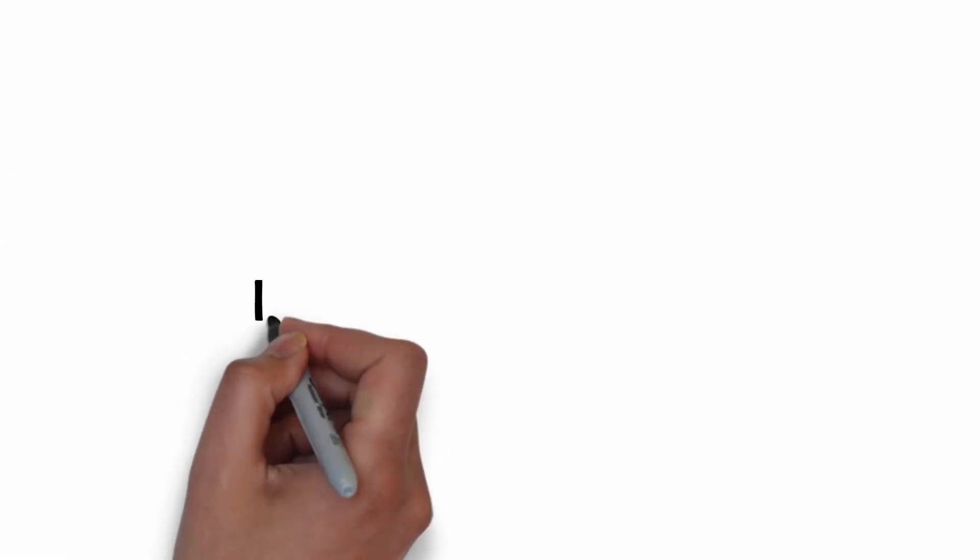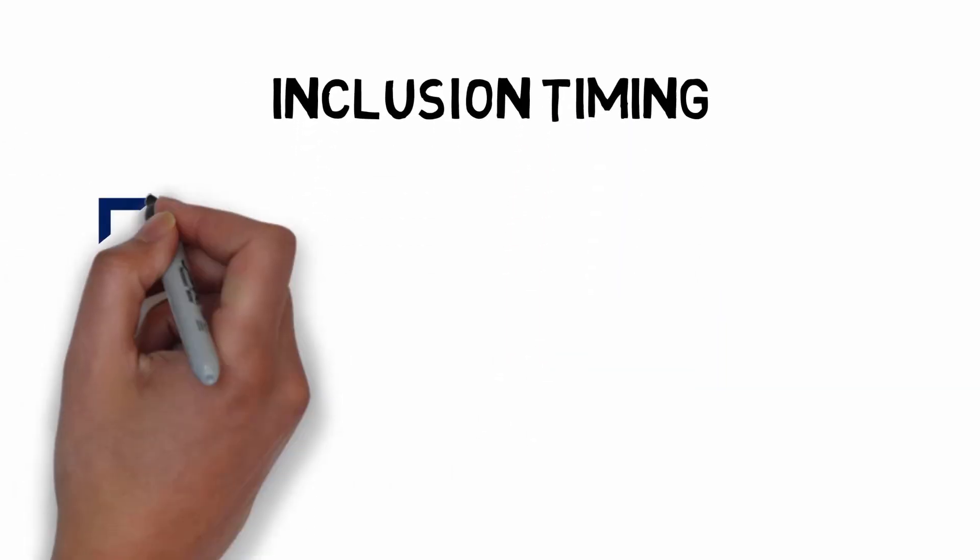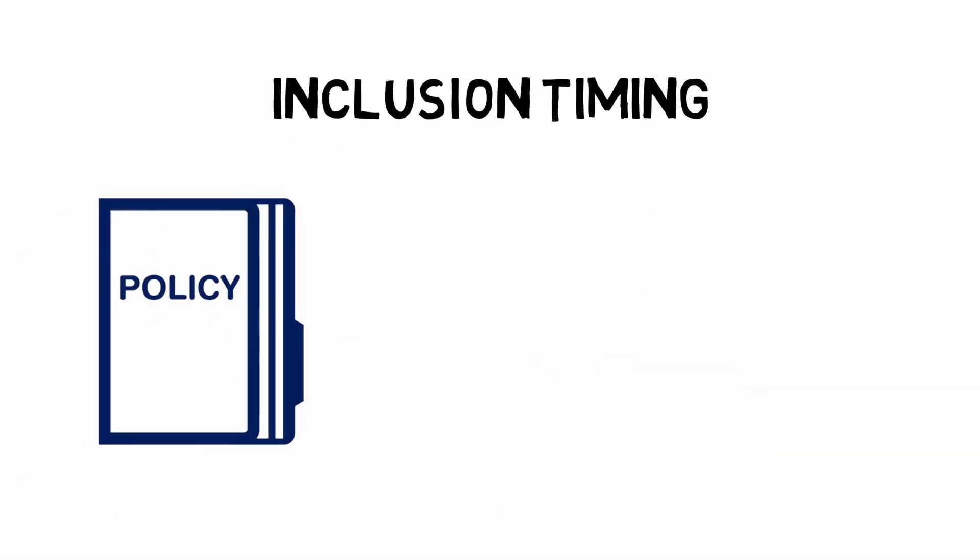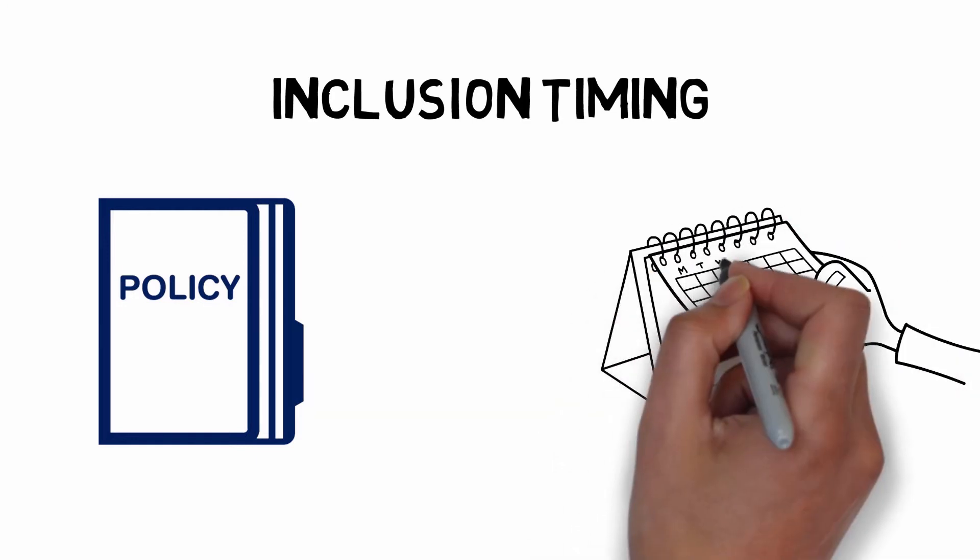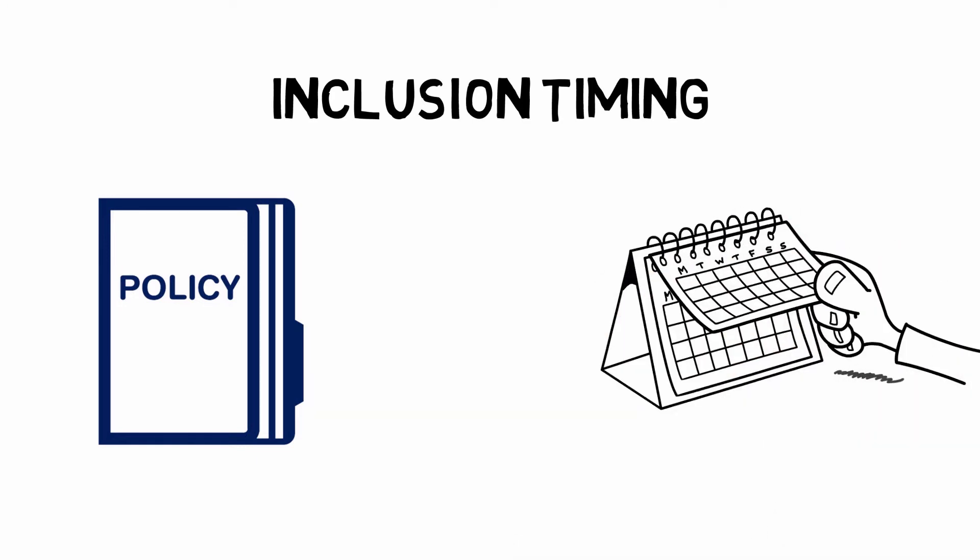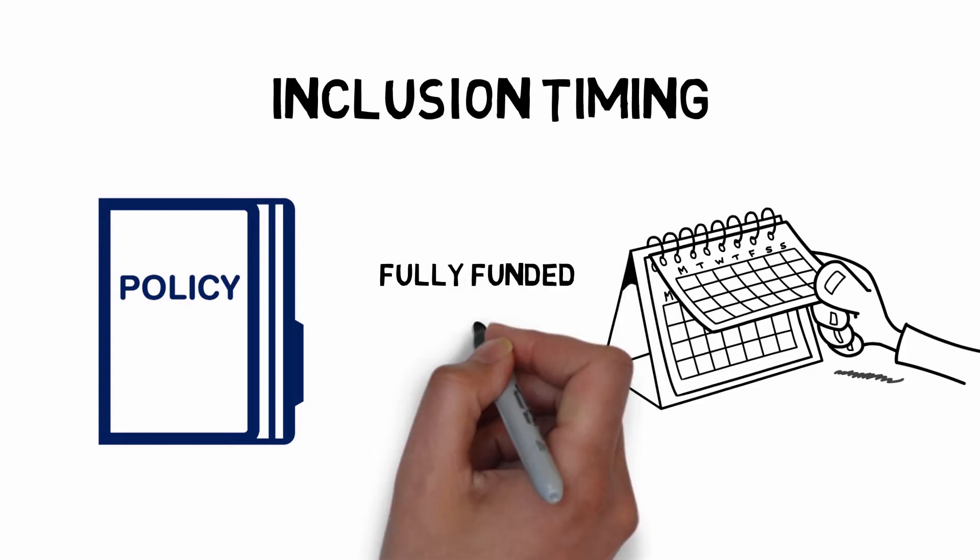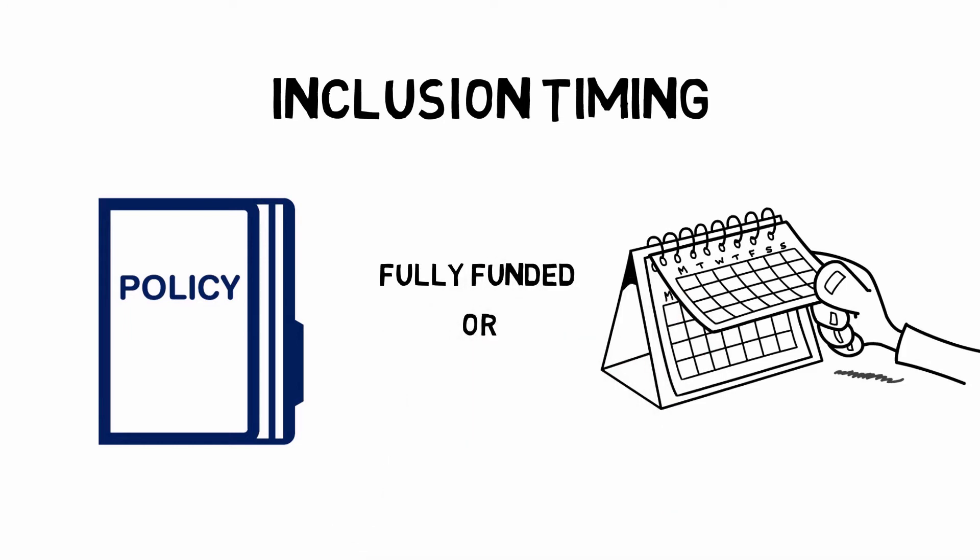The timing of the portfolio's inclusion in the composite will be based on the inclusion policy set in your firm's GIPS P&P. For example, the first full month after the portfolio is funded, or the first full month after the portfolio is at least x percent invested.